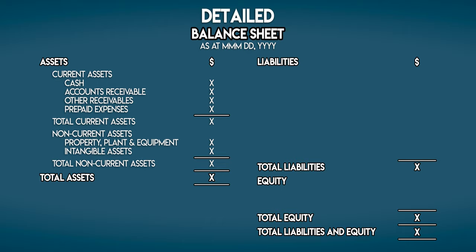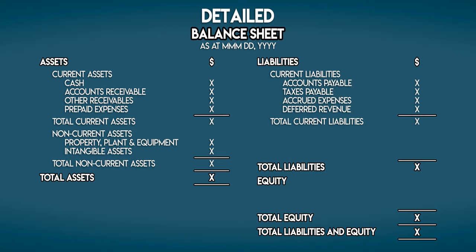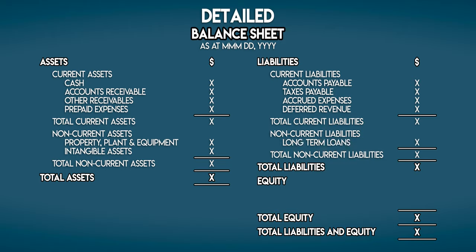We do the same thing with liabilities. Current liabilities are short-term liabilities — payables, accrued expenses, and deferred revenue. And non-current liabilities are long-term liabilities, stuff like long-term loans. Equity, on the other hand, is a different kettle of fish. First, we have capital contributions, which is the money invested into the business by its owners. For a company with shareholders, we might call this common stock. And then we have the business's retained earnings, which are its accumulated profits held for future use. I do have a balance sheet cheat sheet which summarizes all of this — the link's in the description.